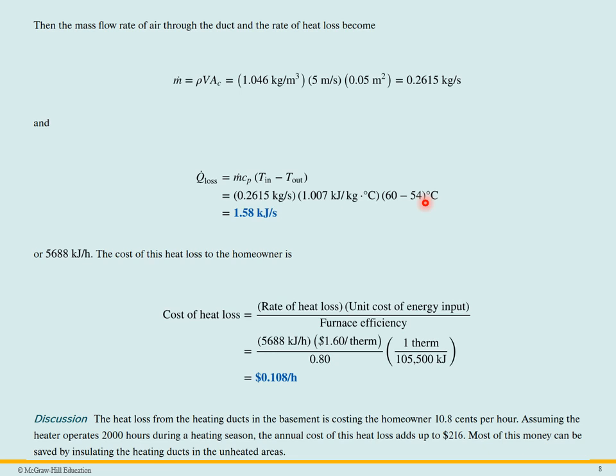So here, we've calculated how much heat loss it is in kilojoules per second. But if we want to calculate how much money we're losing, we can convert that to kilojoules per hour because that's what we're given. We're given the cost per kilowatt hour. So the cost is going to be the rate of heat loss, which we just calculated here, times the unit cost per therm. Well, a therm is given by 105,500 kilojoules. And this is a number that you can find in the front of your book.